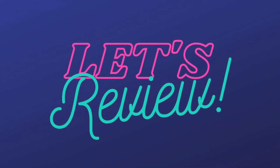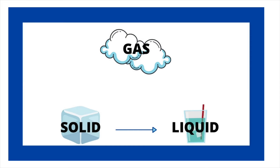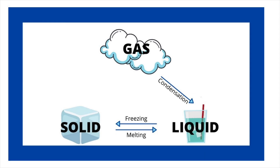Let's review what we have learned today by testing our new knowledge. Look at this arrow — it is pointing from the ice to the water. What is the name of that phase change? Melting. What is the opposite of melting? Freezing. Now look at this arrow pointing from the cloud to the water. What phase change is that? Condensation. And what is the opposite of condensation? Evaporation. What should we label this arrow pointing from the cloud to the ice? A gas changing into a solid is called deposition. What is the opposite of deposition? Sublimation.